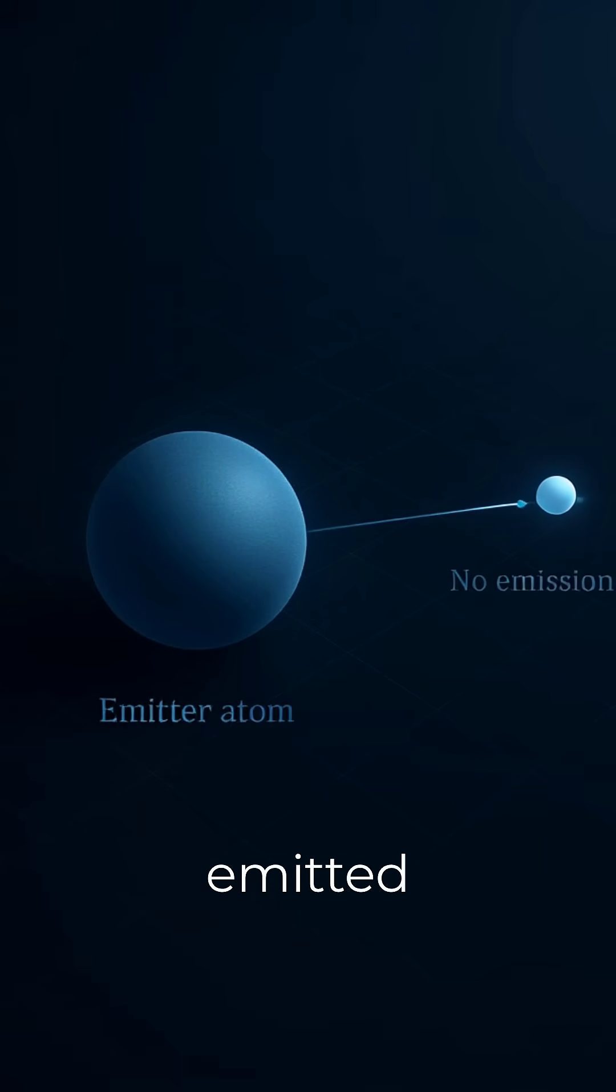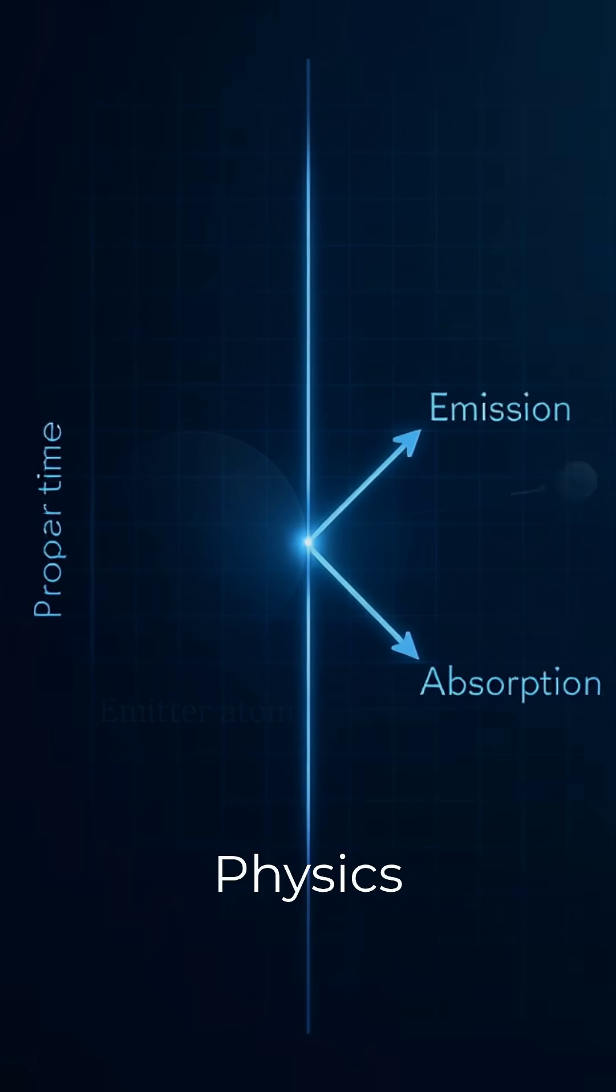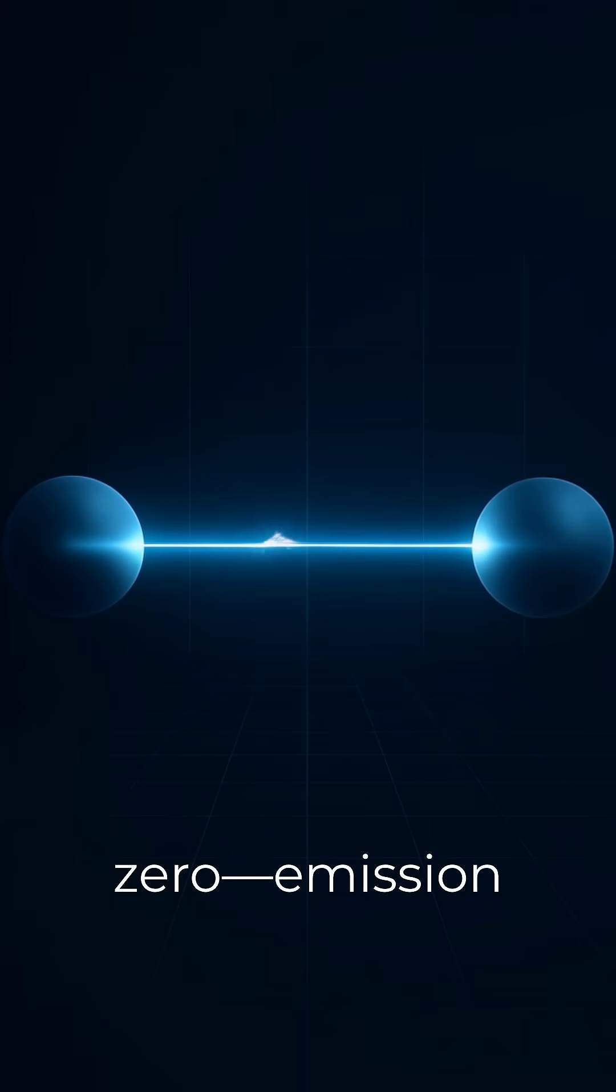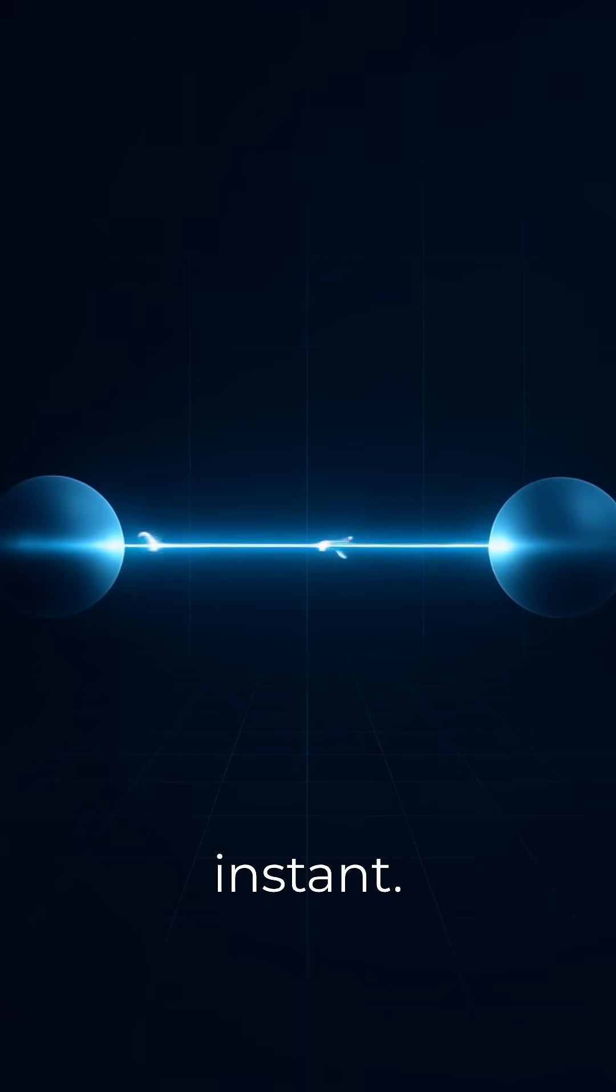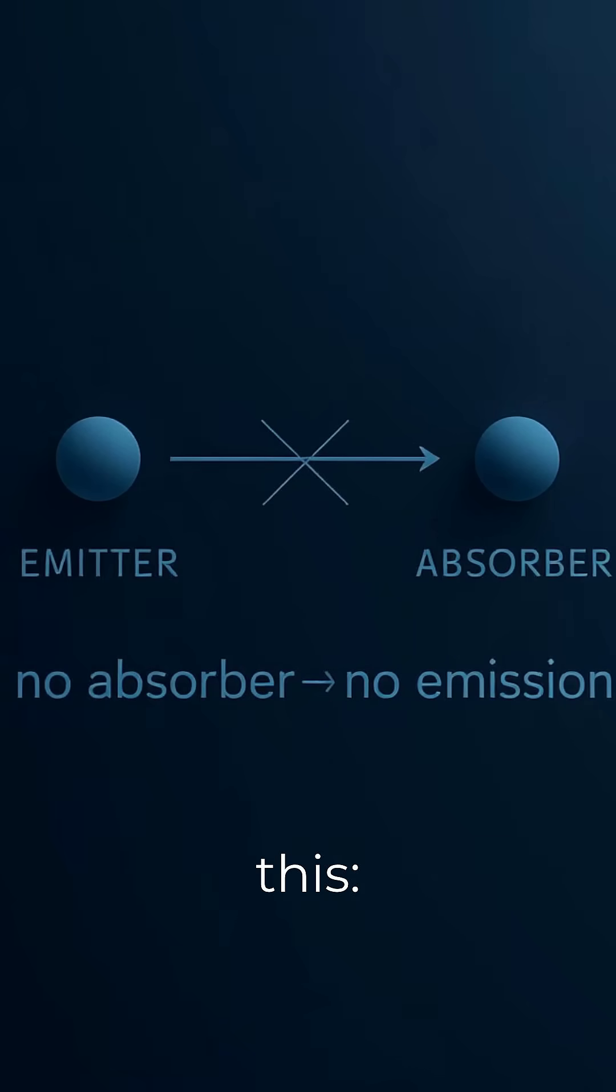What if photons are never emitted unless something can catch them? Physics fact, a photon's proper time is zero. Emission to absorption is instant. So try this: no absorber, no emission.